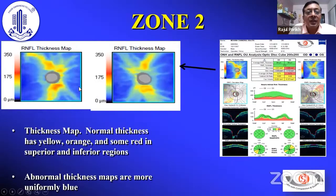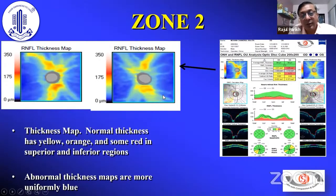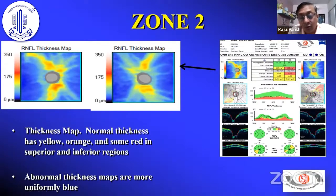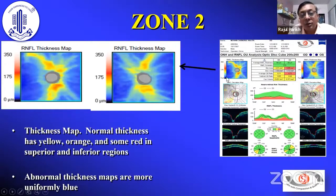Zone 2 is the thickness map obtained by the machine. Remember: the darker the color, the more normal the value. If there is red or dark yellow, the values are normal. If it is blue or light blue, the RNFL is thin. This gives the gross value.